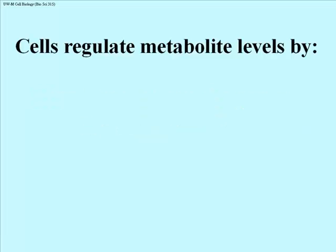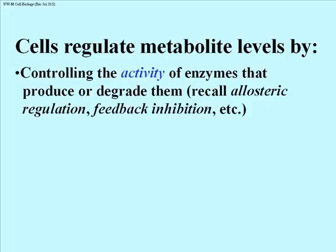Cells regulate their metabolism and the level of different metabolites — that is different molecules in the cell — by controlling the activity of enzymes that produce or degrade them. You may recall allosteric regulation, feedback inhibition, and so on, occurring using allosteric effectors as signals of cellular health, either speeding up or slowing down appropriate reactions in the cell by changing the shapes of enzymes in various biochemical pathways.